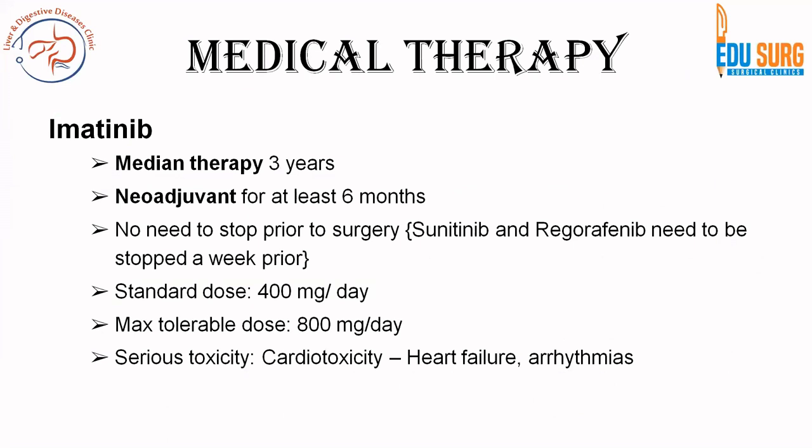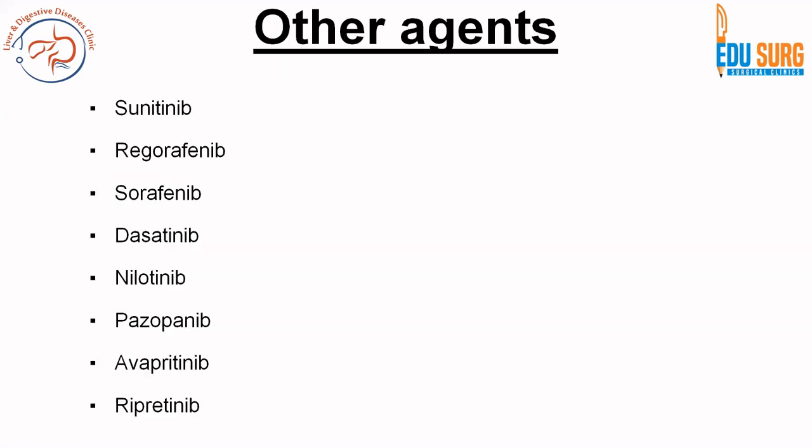Coming to medical therapy, imatinib and all of these agents are tyrosine kinase inhibitors. The median duration of neoadjuvant therapy is 6 months. You do not need to stop imatinib prior to surgery, but sunitinib and regorafenib need to be stopped a week prior. The standard imatinib dose is 400 mg per day, while double dose imatinib for patients not responding to standard is 800 mg per day. Cardiotoxicity is the most serious toxicity. Other available agents include sunitinib, regorafenib, sorafenib, dasatinib, nilotinib, pazopanib, avapritinib, and ripretinib. The last two have been added recently to the NCCN guidelines.